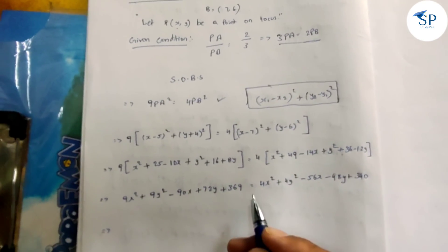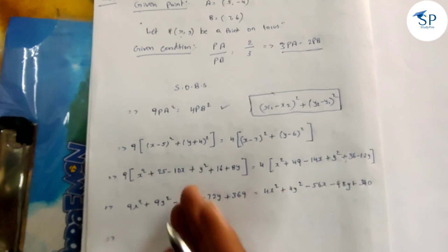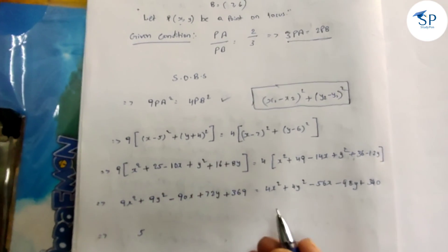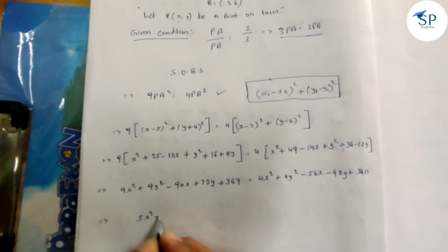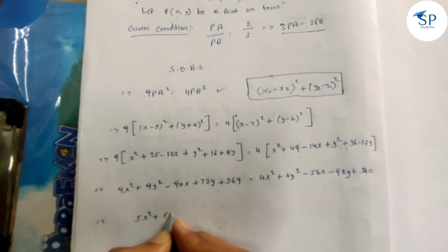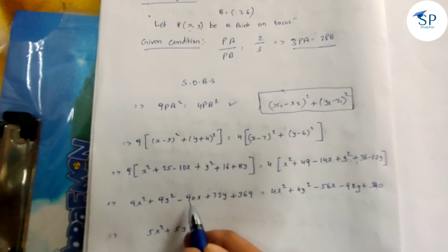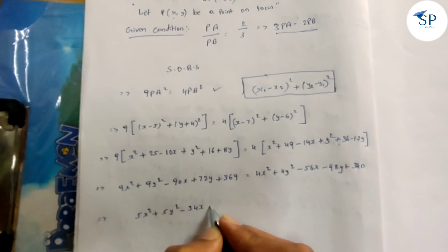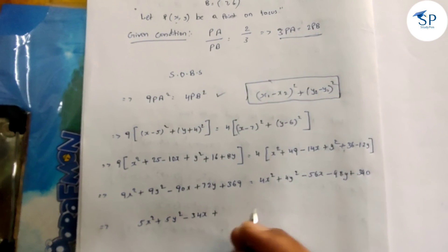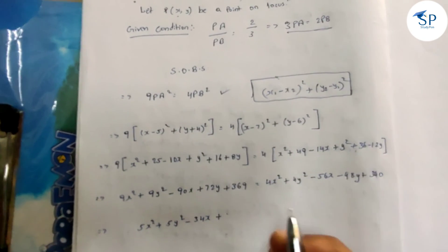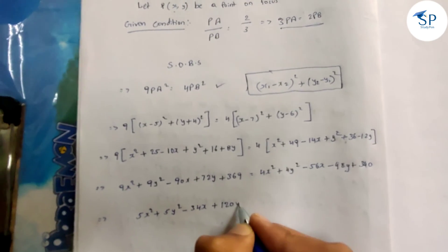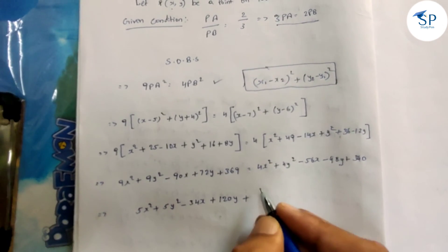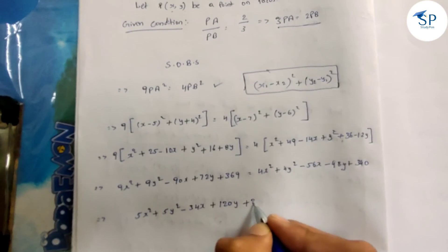Collecting terms: 9x² - 4x² = 5x², 9y² - 4y² = 5y². Then -90x + 56x = -34x. Then 72y - 48y gives plus 120y... wait, minus 90x and minus negative 56x gives -34x. And 72y minus 48y = plus 120y. Constant: 369 - 340 = 29. So the equation is equal to 0.